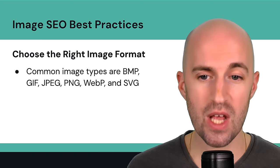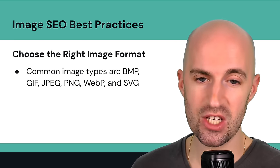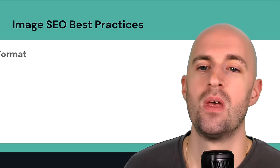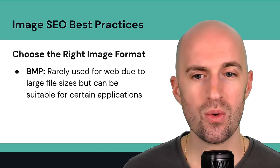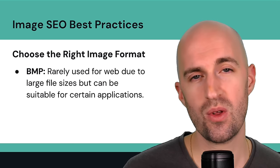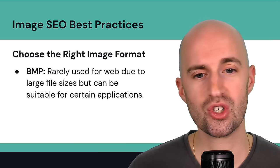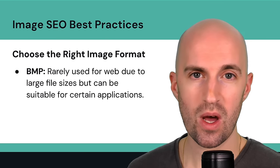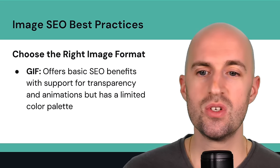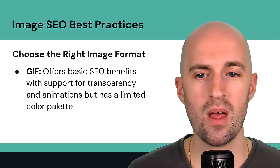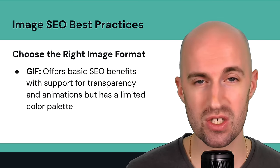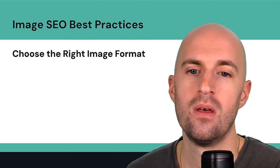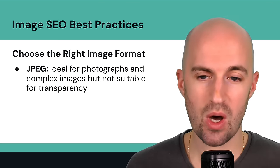Choose the right image format. The most common types are BMP, GIF, JPEG, PNG, WebP, and SVG. BMP files are rarely used for the web because of large file sizes, though suitable for certain graphic design applications like texturing. GIF files offer basic SEO benefits with support for transparency and animations, but have a limited color palette as a downside.